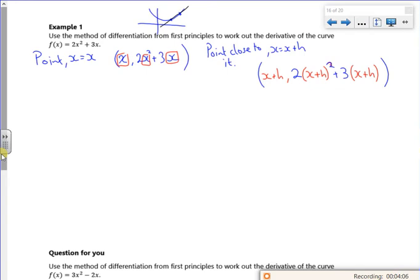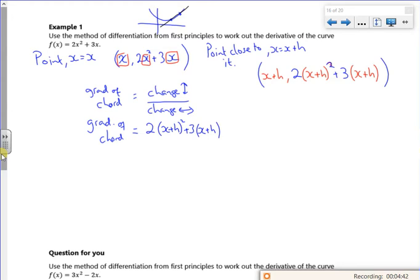I'm going to work out the gradient between those two points, so I'll have a gradient of the chord. So that's a change going up divided by a change going across. So my gradient of my chord will be 2 lots of x plus h all squared plus 3 lots of x plus h, so that's my f of x plus h, and then minus my f of x, so minus 2x squared plus 3x. All that's divided by my change going across, which is x plus h minus x, so that's where the h comes from on the bottom.